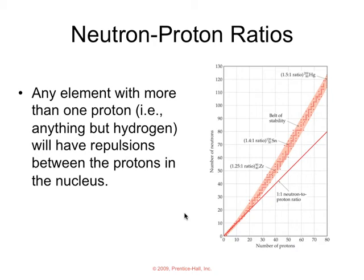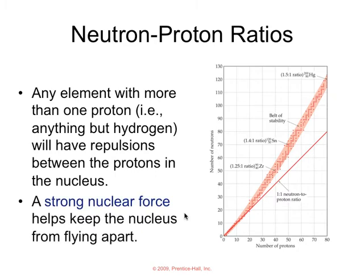An element with more than one proton, that is anything but hydrogen-1, they are going to have repulsions between the protons in the nucleus. Remember, protons are positively charged, like charges repel each other. So there are repulsive forces within the nucleus. Something called a strong nuclear force is what helps keep the nucleus from flying apart.